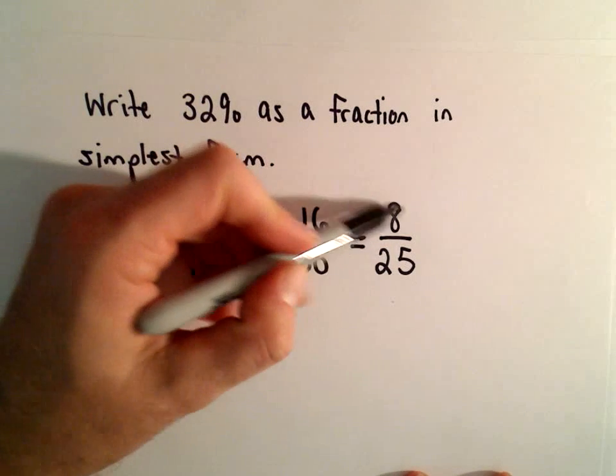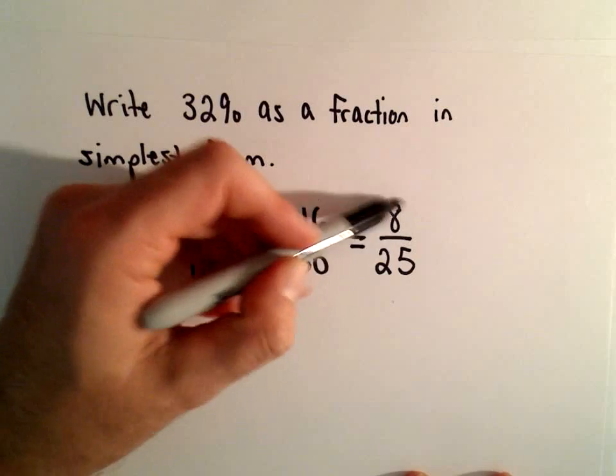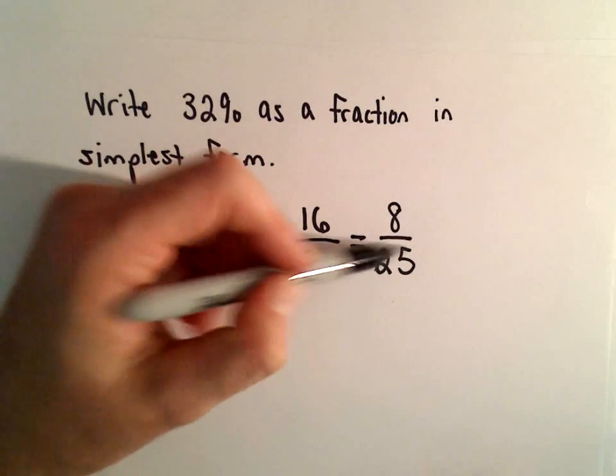8 over 25. Well, let's see, 1, 2, 4, and 8 go into 8. None of those numbers, other than 1, go into 25. So this would now be our fraction in simplest form.